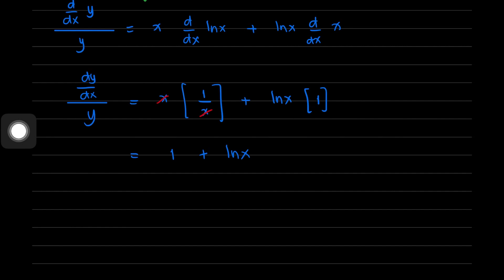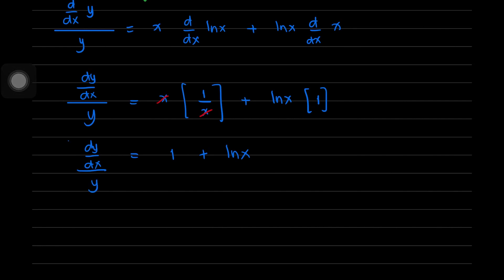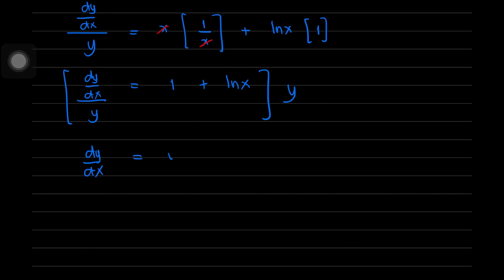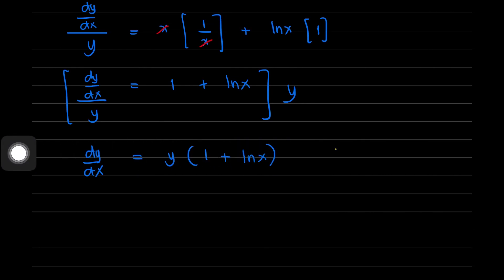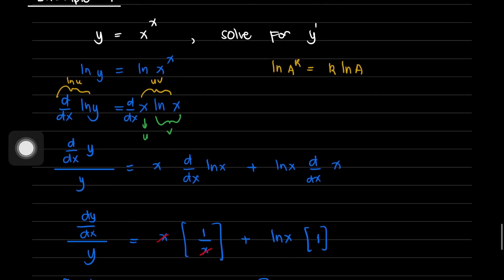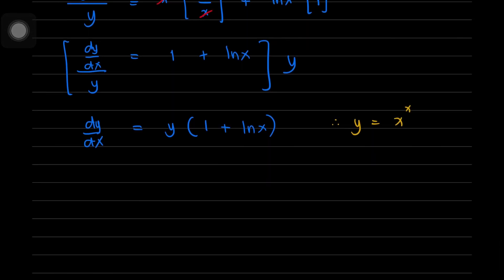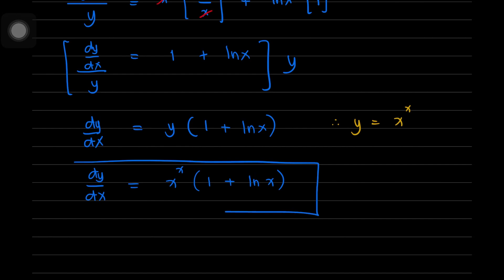To get rid of the y on the left side, we multiply both sides by y. We now have dy/dx equals y multiplied by 1 plus ln of x. Since y is given to be x raised to x, substituting gives us the final answer: dy/dx equals x raised to x, multiplied by 1 plus the natural logarithm of x.